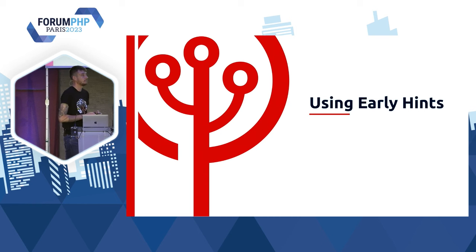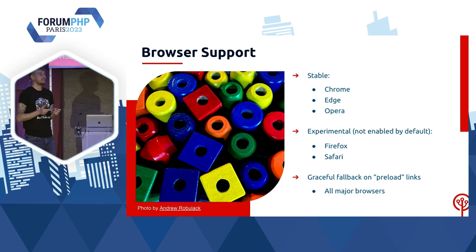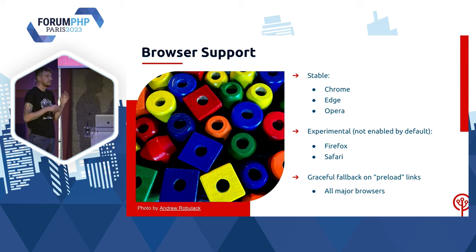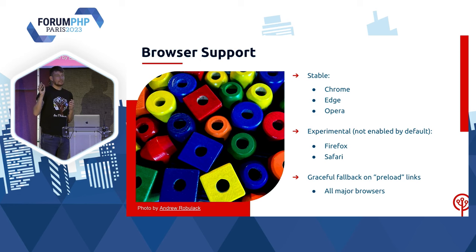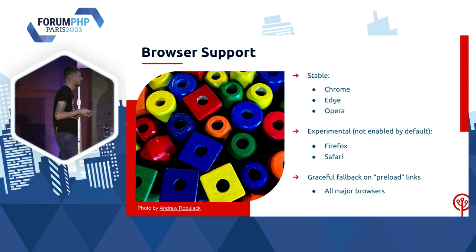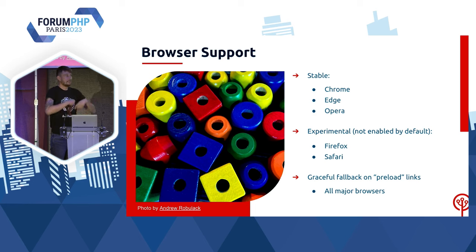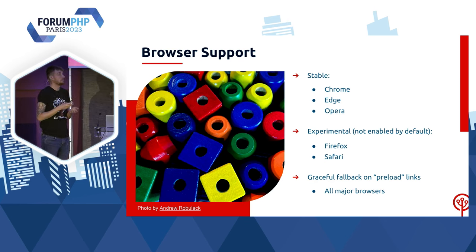Comment on fait pour utiliser ça dans nos applications PHP ? Déjà, il faut que l'utilisateur ait un navigateur compatible. Actuellement, les navigateurs compatibles c'est les dérivés de Chromium, qui ont tous activé ça au cours des derniers mois. Il y a aussi le support expérimental dans Firefox et Safari, et ça devrait être mis dans les versions non expérimentales relativement prochainement. De toute façon, les réponses 103 étant temporaires, les navigateurs les ignorent s'ils ne connaissent pas le code de statut. Donc envoyer ces codes peut améliorer les performances sur Chrome, et sur les navigateurs qui ne le supportent pas, c'est juste aussi lent qu'avant — il n'y a que des avantages, pas d'inconvénients.